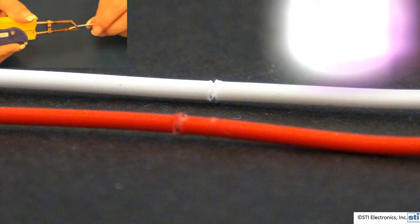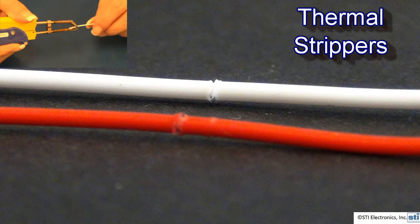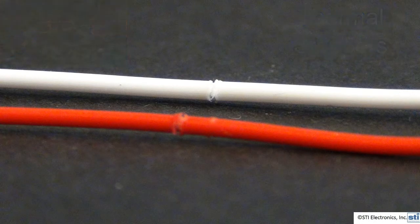This image shows two thermally stripped wires. If you look closely, you can see that the hot tweezers have melted down through the insulation, but the difference is they have not separated the insulation slug. As a matter of fact, there is a thin film of insulation still connecting both pieces. This is beneficial from a strand damage point of view because the tweezers never actually make contact with the wire strands. But it can make it very difficult to break that bond and remove the insulation slug.